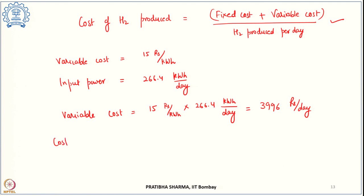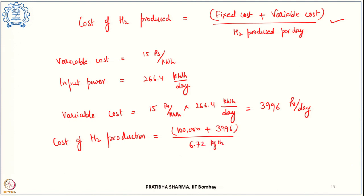Substituting into the cost formula: (100000 + 3996) rupees per day divided by 6.72 kg of hydrogen per day gives a cost of rupees 15,475.59 per kg of hydrogen being produced. With that, all parts of this problem have been solved.